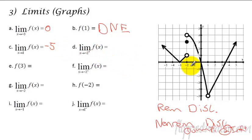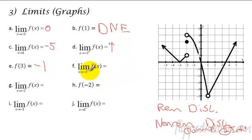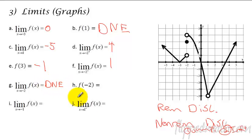This one is negative 2 from the right side, so we're going to approach negative 2 from only the right side, going back towards it. We're going to go towards negative 2, and that has a value of 4. F of 3 right there has a y value of negative 1. Here we're approaching negative 2 from the left, so that's approaching a y value of 1.